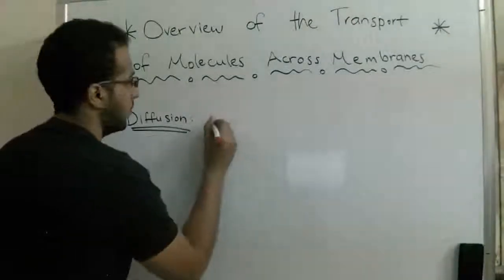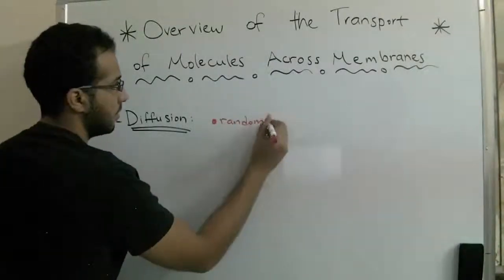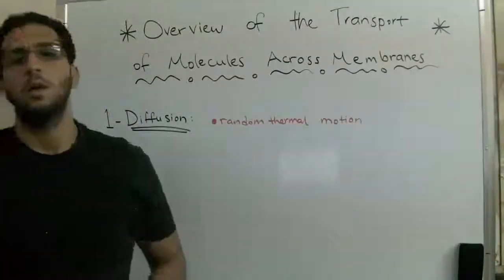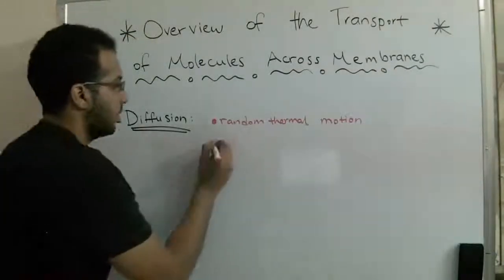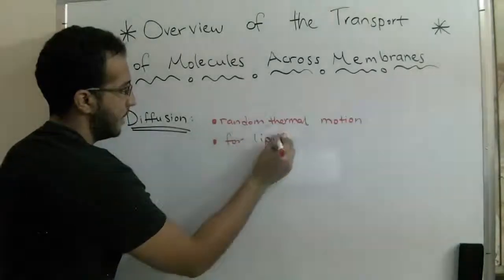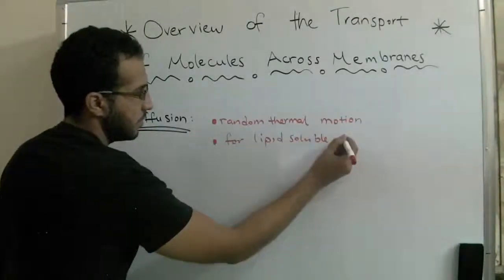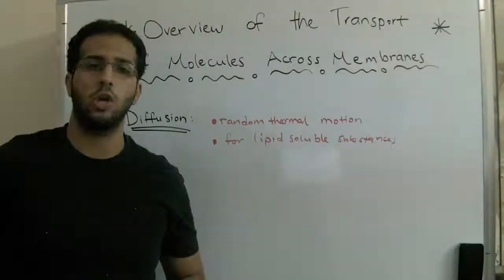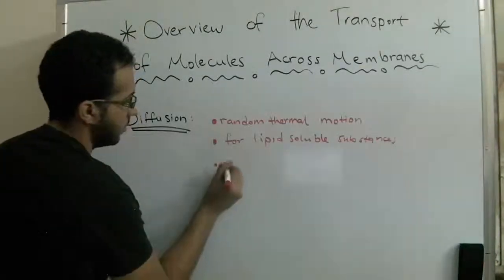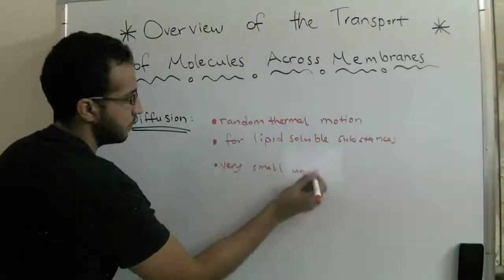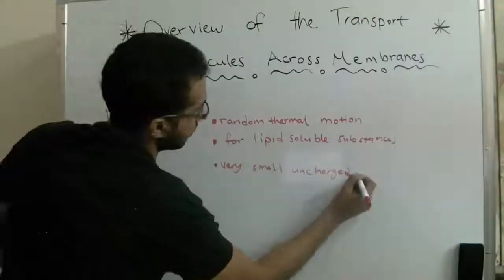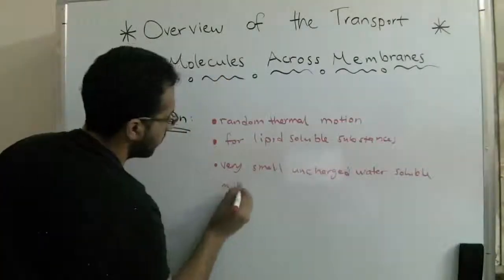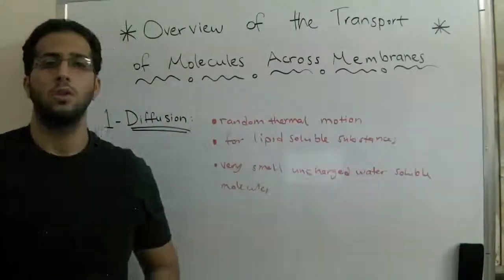We will start by explaining diffusion. Diffusion is made by random thermal motion. It is for lipid-soluble substances and also for very small uncharged water-soluble molecules. So this is diffusion.